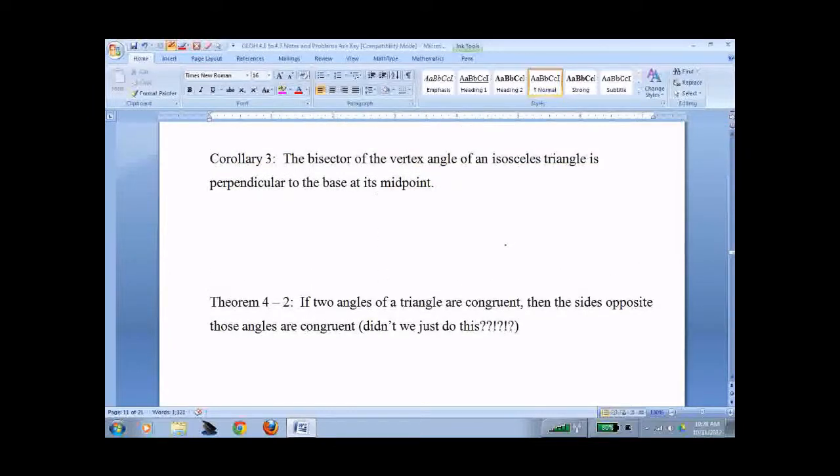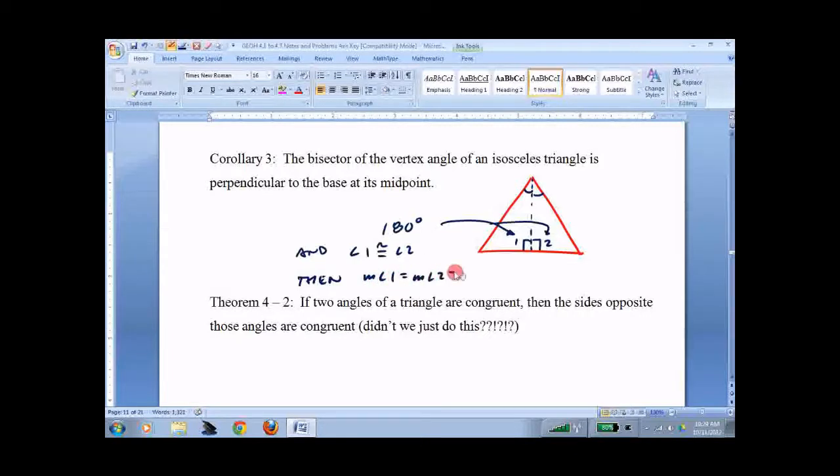Corollary three, the bisector of the vertex angle. I have no idea what's going on. Let's draw a picture. The bisector is perpendicular. This kind of feels like a duh theorem, but it's actually not. Since we have 180 degrees here, since we know that angle one and angle two are congruent, then we know the measure of angle one equals the measure of angle two equals 90 degrees. That all follows from the other stuff, so that's why it's a corollary, not its own theorem.